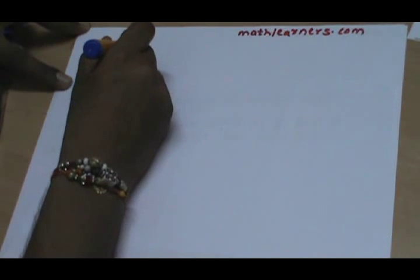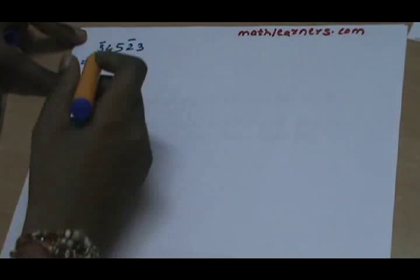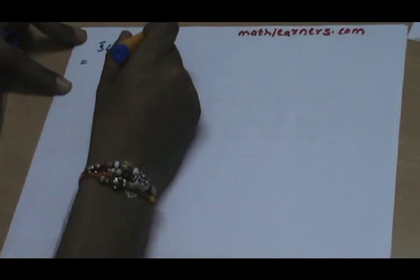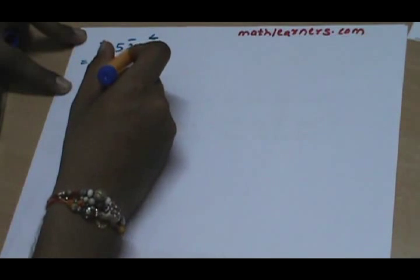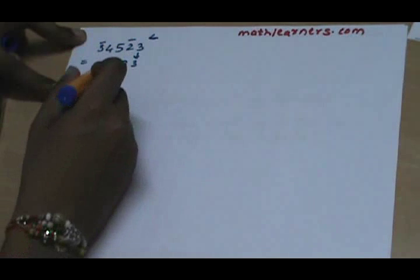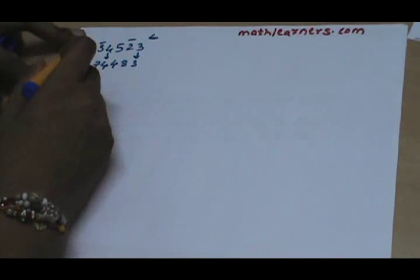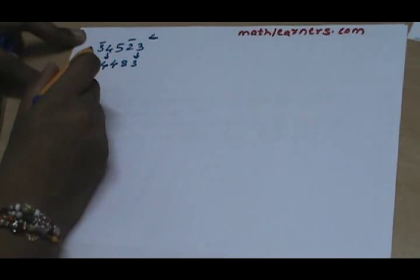Let's say we have a win-column number 3̄ 4 5̄ 3. We want to convert this win-column number to a normal number. We follow the same procedure seen in the previous video: we go from right to left. 3 is written as it is; 10's complement of the first bar digit — 10's complement of 2 — comes as 8; decrement 5 by 1 so it comes as 4; this 4 is written as it is; 10's complement of 7 comes as 7. But then we have to decrement the next digit by 1, and in this case no digit is present.